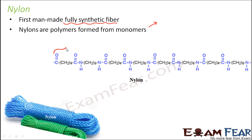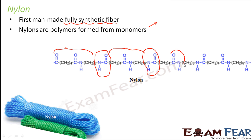If you look at nylon's structure, you can see repetitive units — the same units are getting repeated over and over again. These units are all connected together by a specific bond called the amide bond. As you go to higher classes, you will learn about different types of bonding, acids, and amines. The key idea is that repeated units are joined together by bonds to form a polymer — that is how the structure of nylon looks.